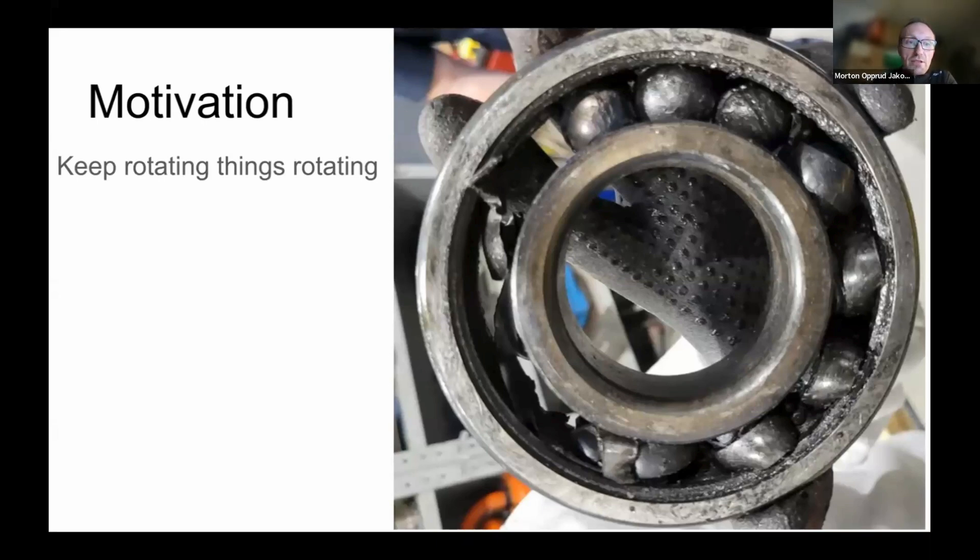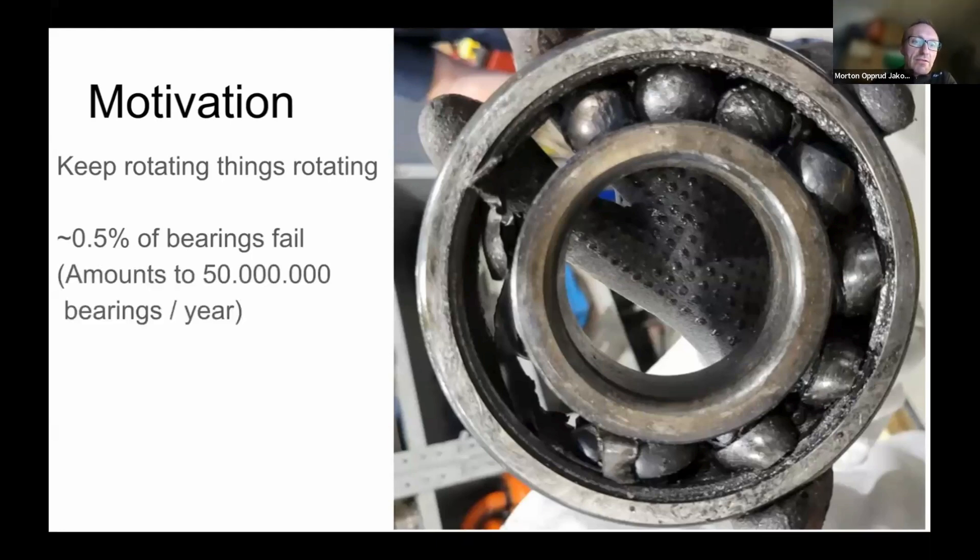So basically, to keep things that are supposed to rotate, keep them rotating longer. And you could say, why would you want to bother with that? It's only 0.5% of bearings that fail. And even though that might seem like a small number, it actually accumulates to around 50 million bearings per year. That's quite a substantial amount.